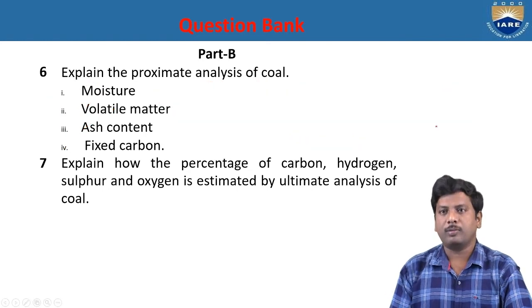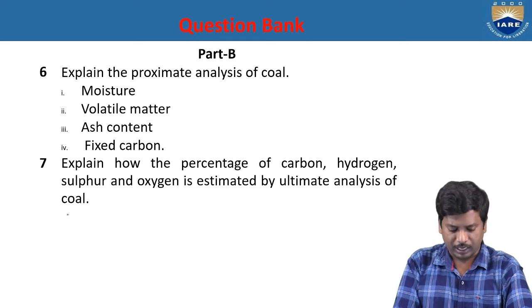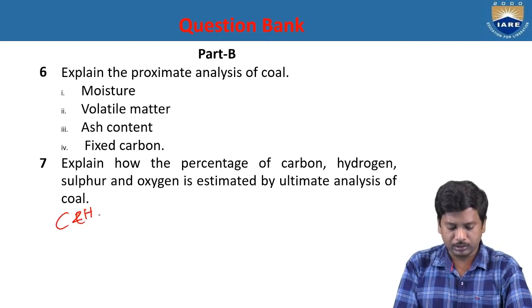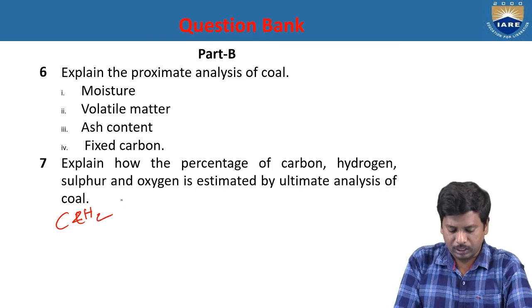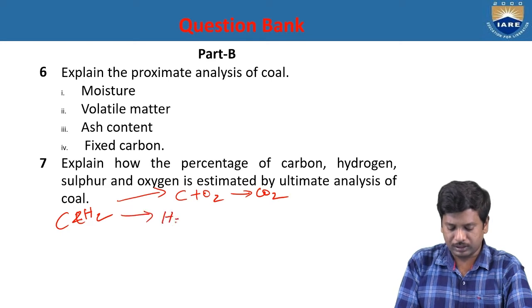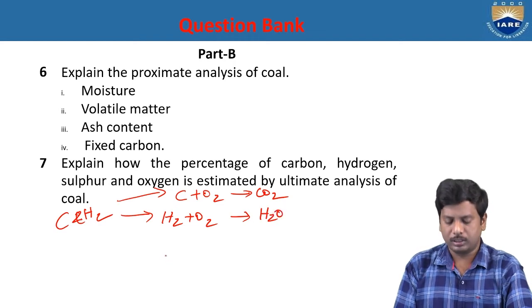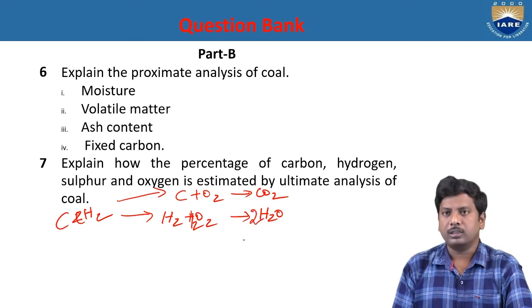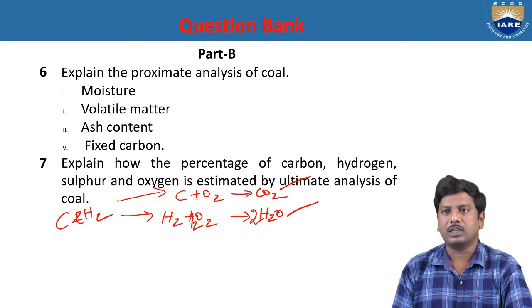Seventh question: Explain how percentage of carbon, hydrogen, sulfur, and oxygen is estimated by ultimate analysis of coal. In the ultimate analysis, carbon and hydrogen undergo combustion reactions. Carbon reacts with oxygen to give carbon dioxide, and hydrogen reacts with oxygen to give water vapor. From the combustion products — carbon dioxide and water vapor — we can determine the individual weights of carbon and hydrogen.